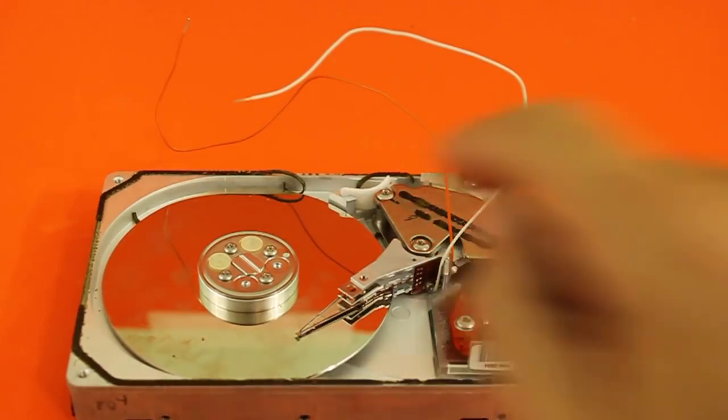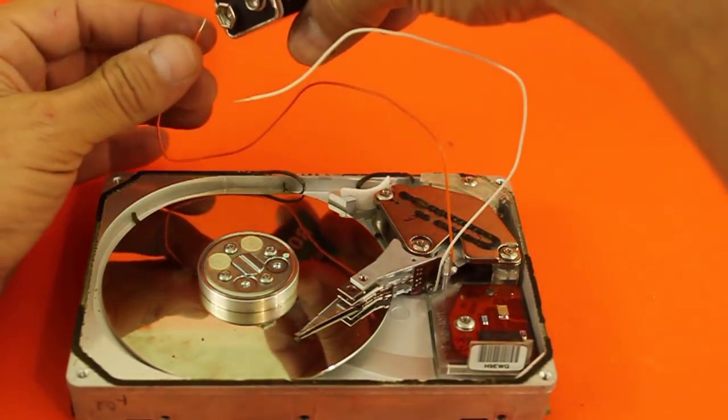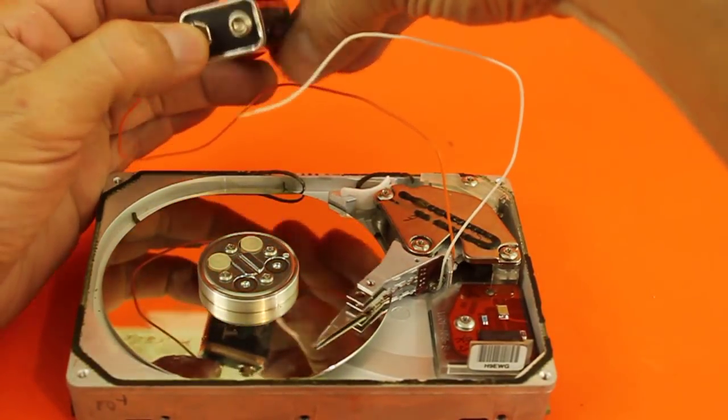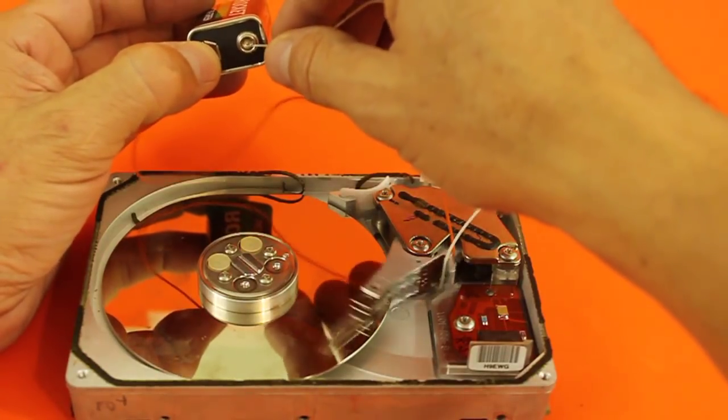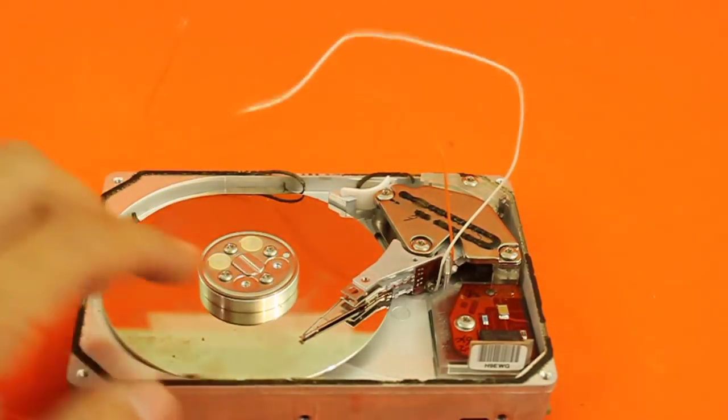The two wires are now connected to the coil of the reading head. If we apply a voltage, the reading head moves.